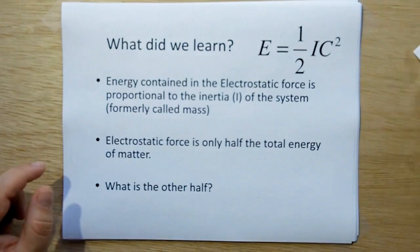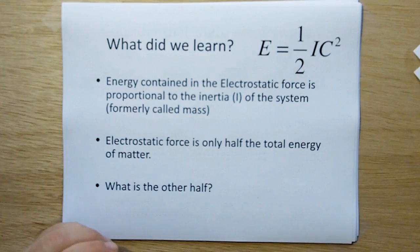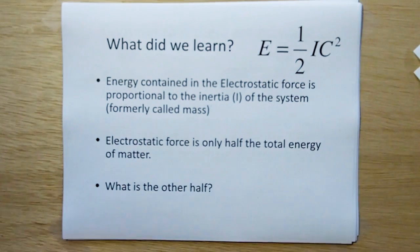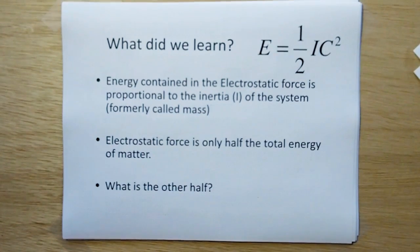So what did we learn? The energy contained in the electrostatic force is proportional to the inertia of the system, formerly called mass. And the electrostatic force is only half the total energy of matter. Well where's the other half?